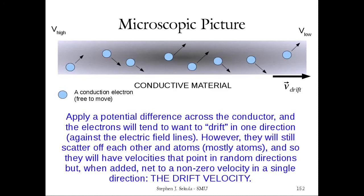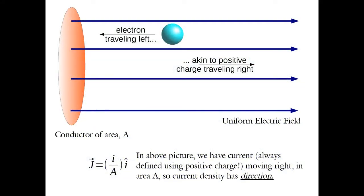If one puts a uniform electric field across the material, one can induce an electron to drift. Remember, if the electric field points that way, electrons will drift that way. Correspondingly, it can be said that the positive charge is moving the opposite direction with equal magnitude drift. Everything in a circuit is defined in terms of positive charge — where does the positive charge move?